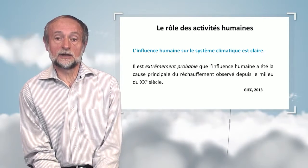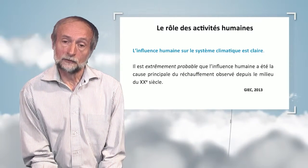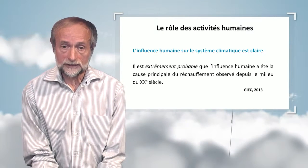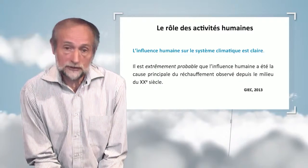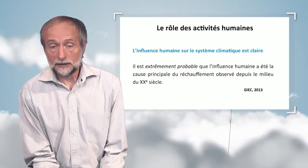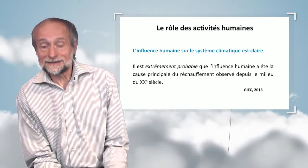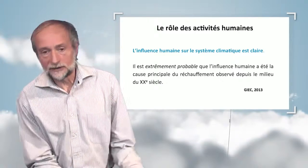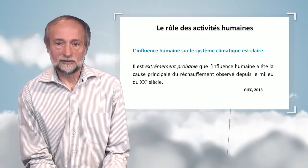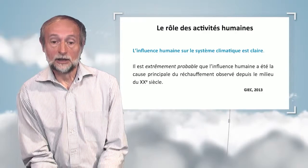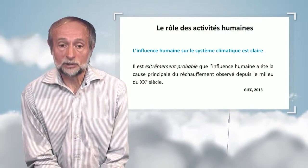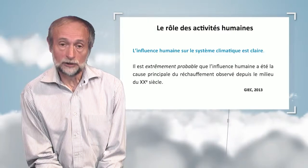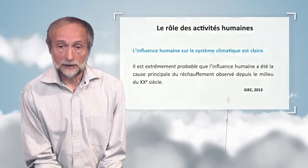One of the main conclusions from the last IPCC report in 2013 — the Intergovernmental Panel — says that the human influence on climatic systems is obvious and demonstrated. And it is likely, with 80% likelihood, that human influence is the main cause for global warming observed since the mid-20th century.